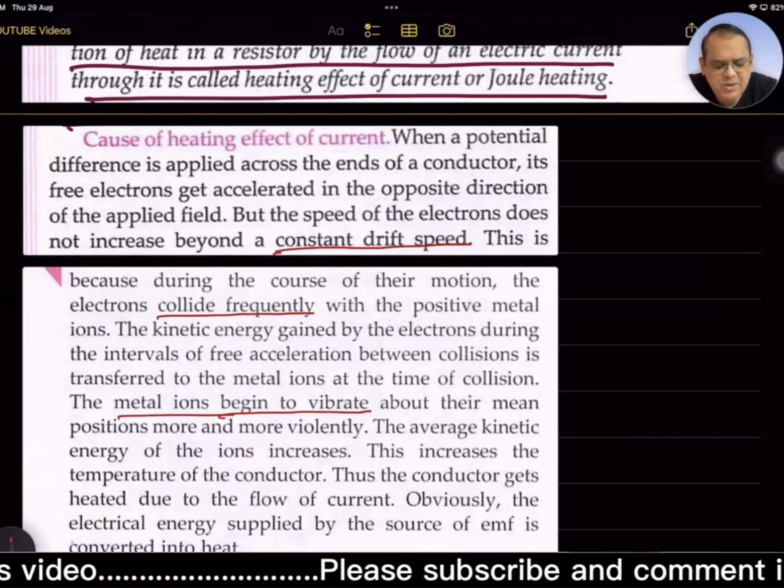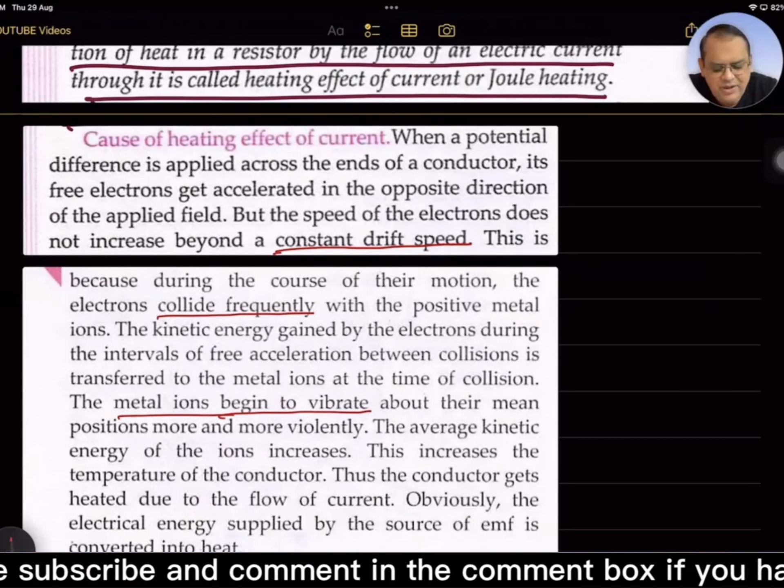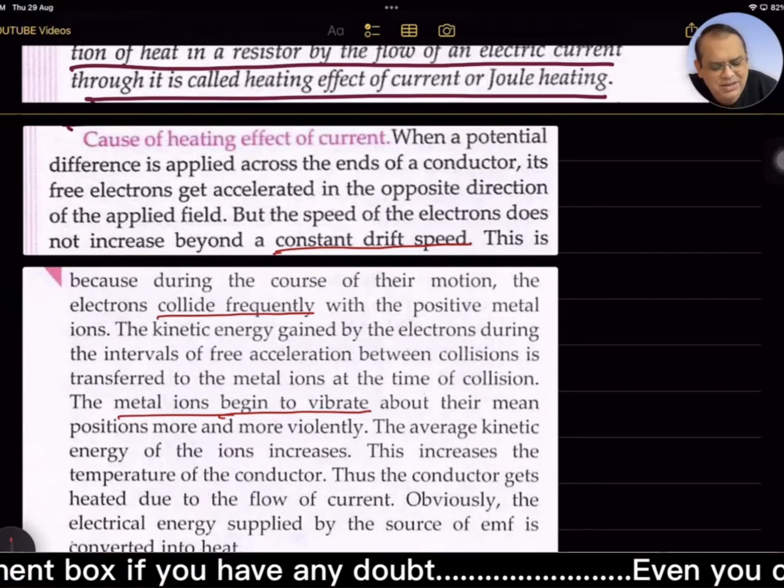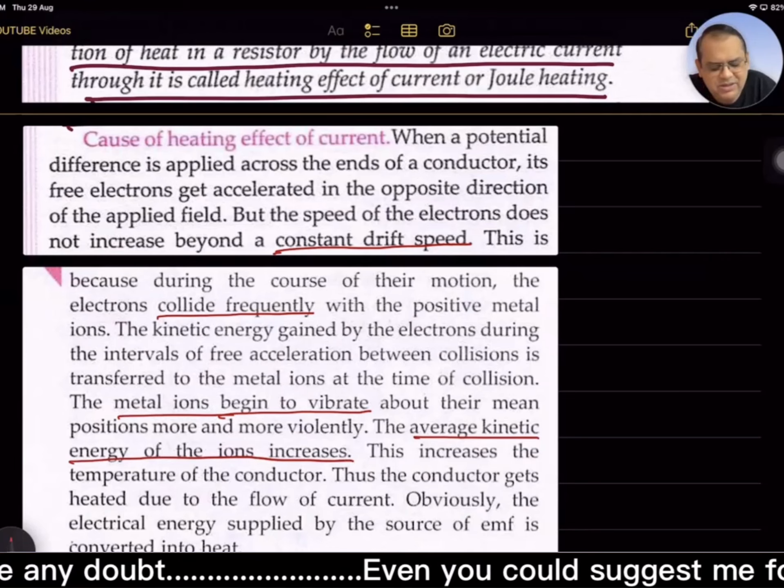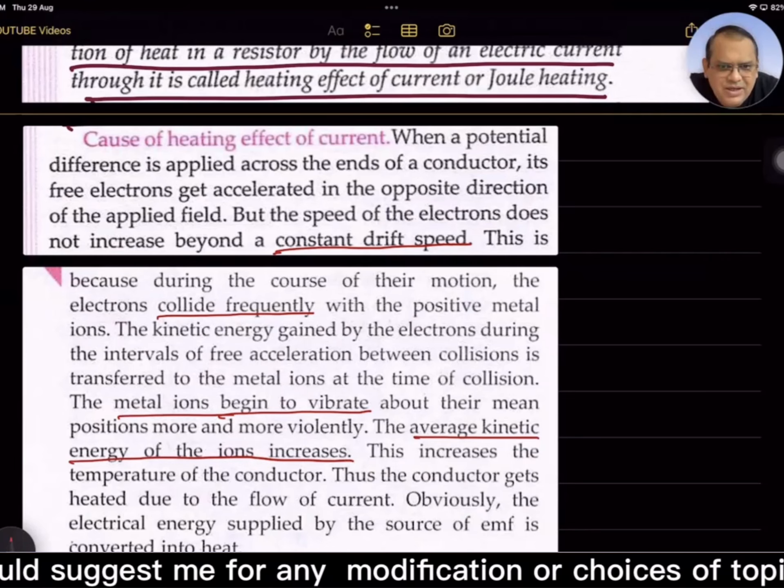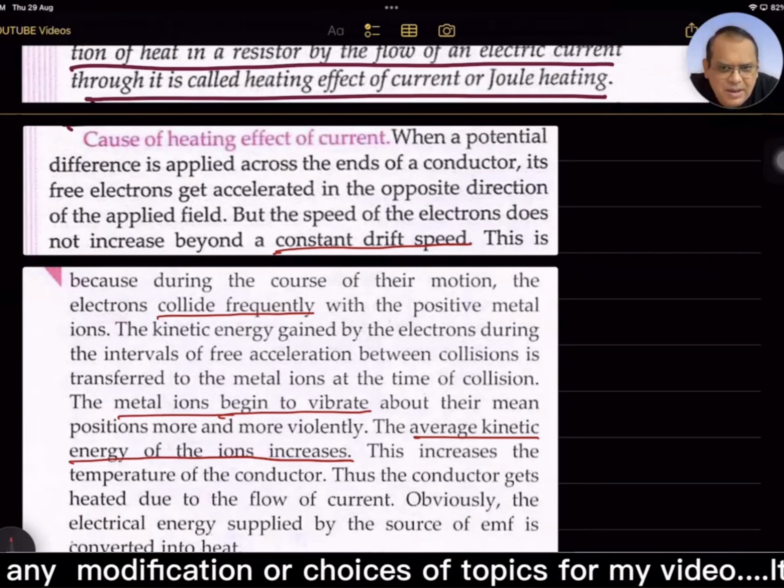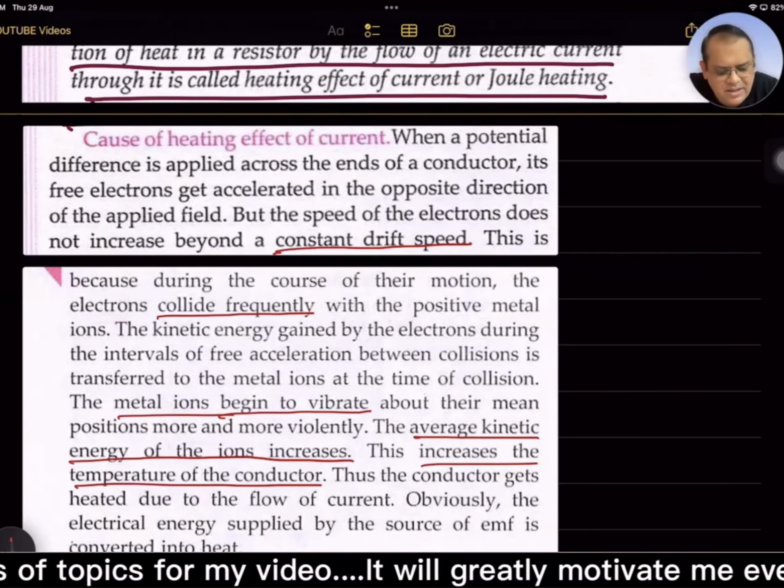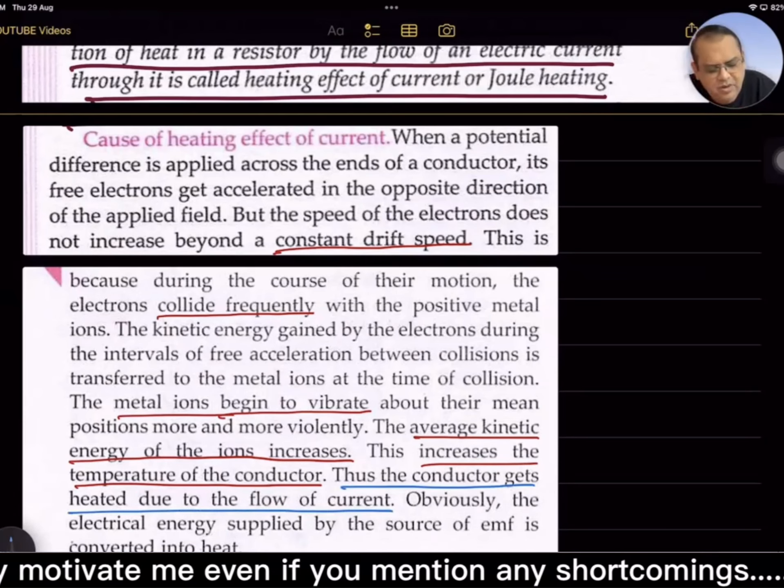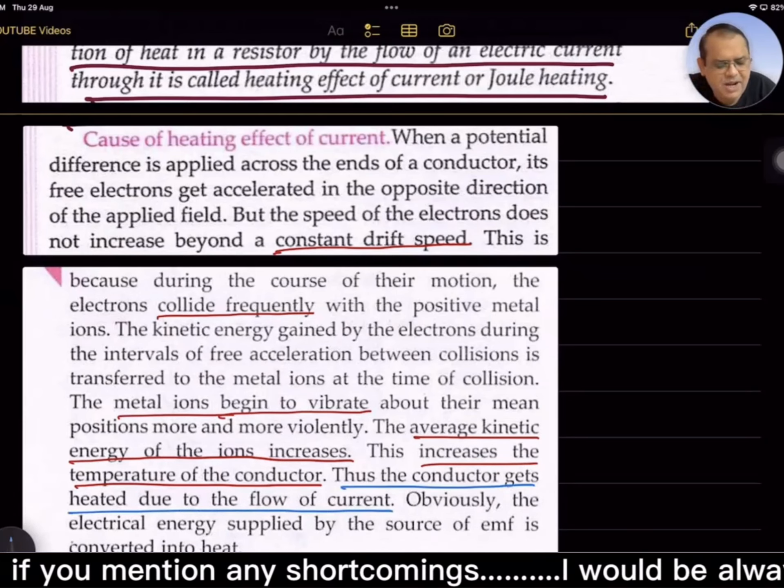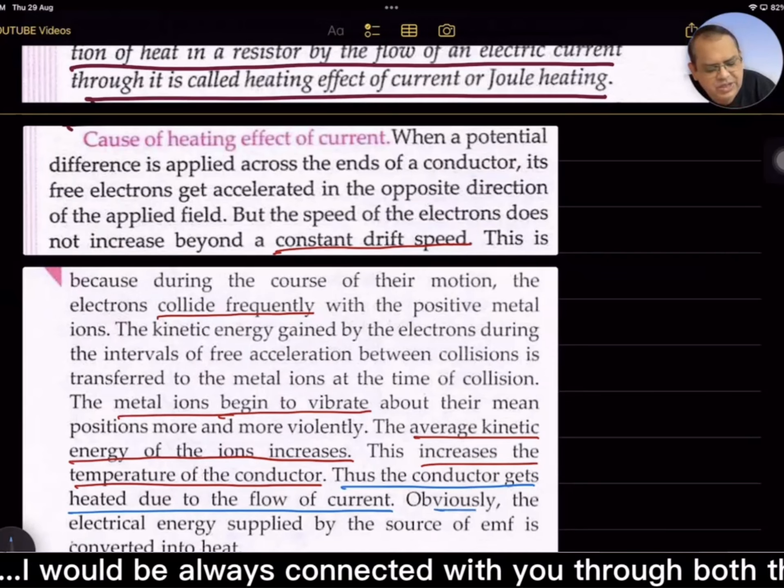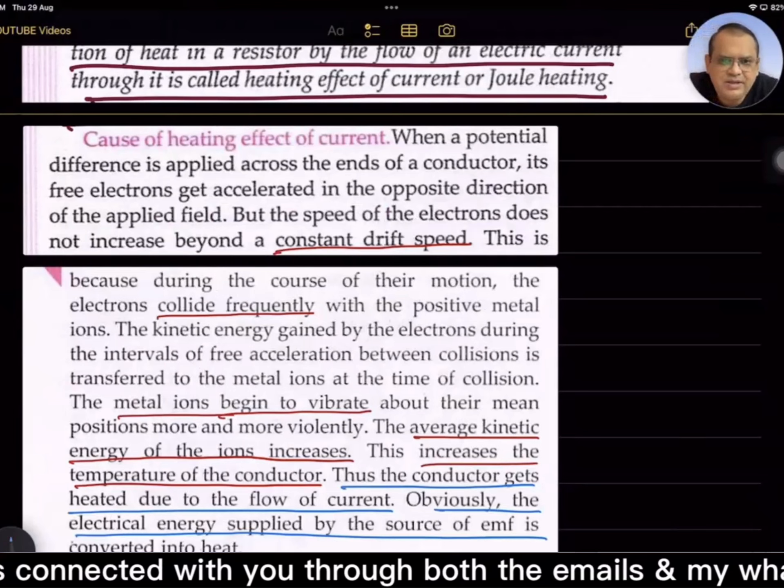The metal ions begin to vibrate about their mean positions more and more violently. The average kinetic energy of the ions increases, which increases the temperature of the conductor. Thus the conductor gets heated due to the flow of current. Obviously the electrical energy supplied by the source of EMF is converted into heat.